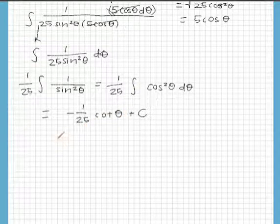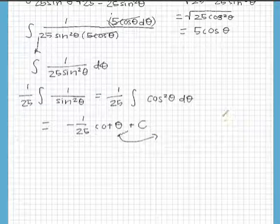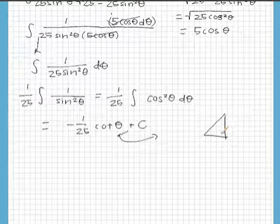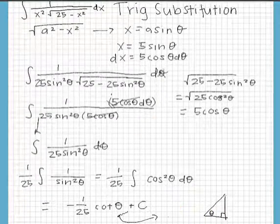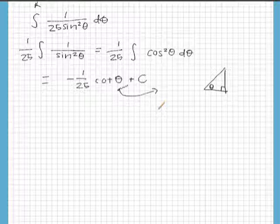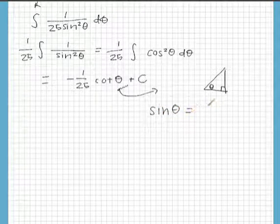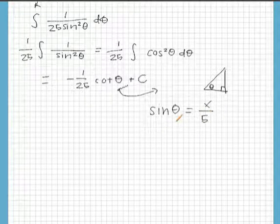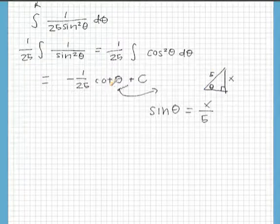So to do this we make a triangle and we put that theta in. We go back up to x equals a sine theta and we solve for sine theta, so we do sine theta equals x over 5. And sine is opposite over hypotenuse so we put the x on this side, 5 up here, and we need to find cotangent theta.